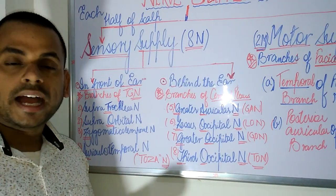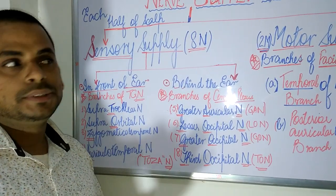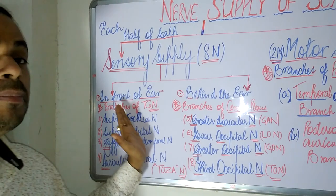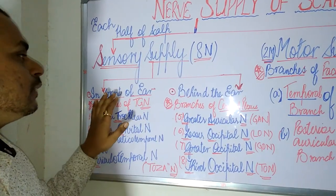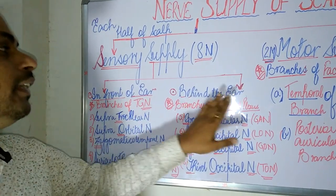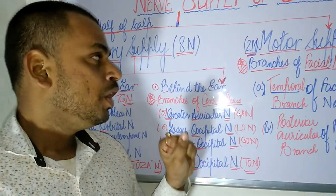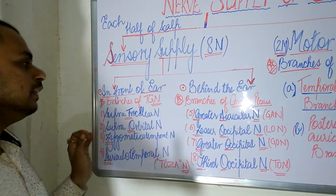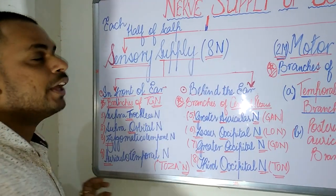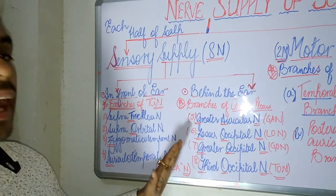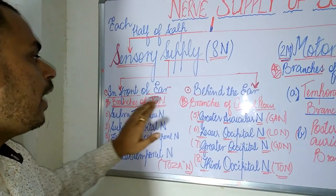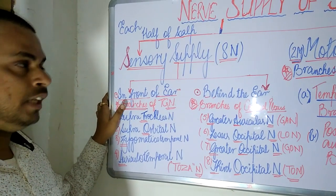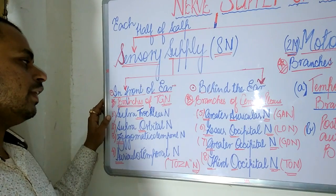I have made a mnemonic to help remember these nerves in order. The sensory supply can be divided into two broad categories: nerves lying in front of the ear and nerves lying behind the ear. The nerves in front of the ear are branches of the trigeminal nerve.